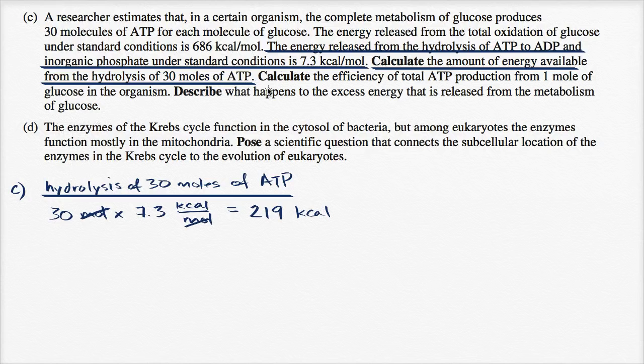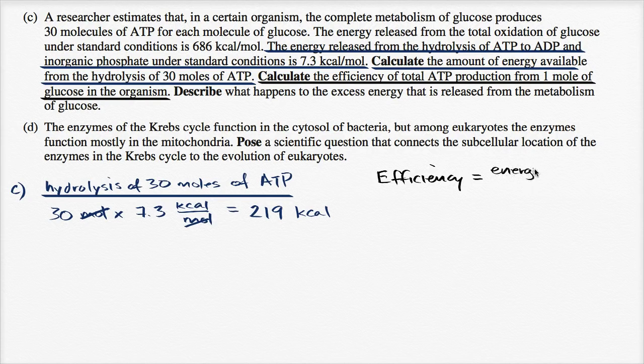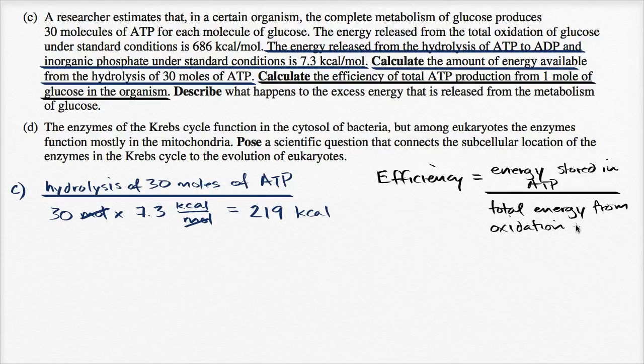All right, now let's do the second part. Calculate the efficiency of total ATP production from one mole of glucose in the organism. Efficiency is equal to energy stored in ATP over total energy from oxidation of glucose.